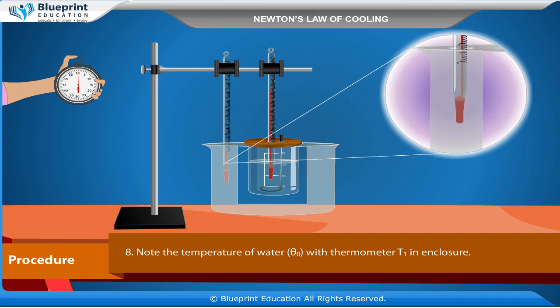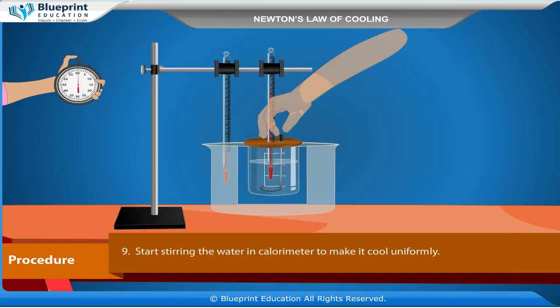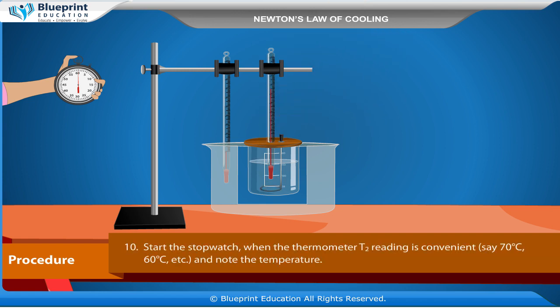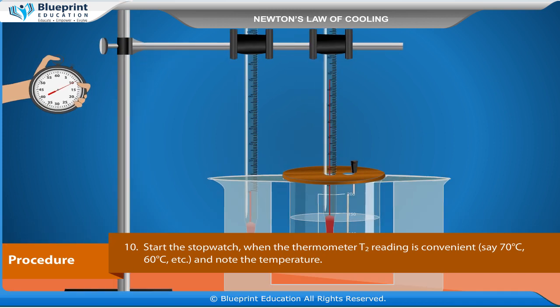Note the temperature of water θ₀ with thermometer T1 in the enclosure. Start stirring the water in the calorimeter to make it cool uniformly. Start the stopwatch when the thermometer T2 reading is at a convenient value, say 70 degrees Celsius, 60 degrees Celsius, etc., and note the temperature.